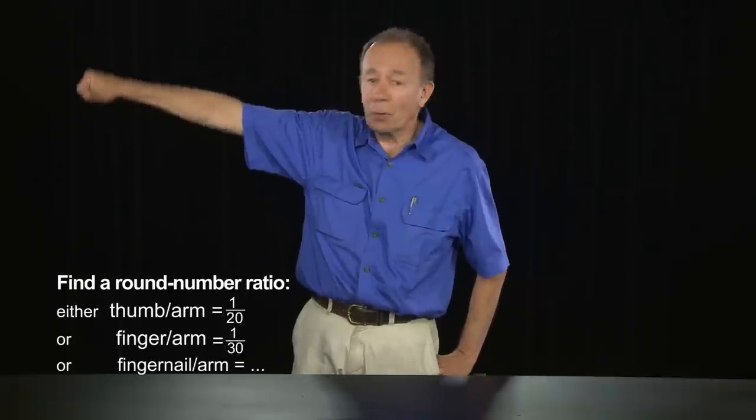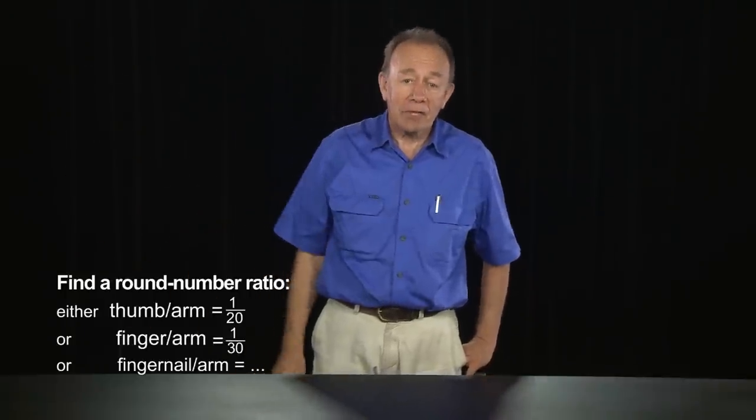Now, you and I are not necessarily the same shape, so you'll need to calibrate your measuring instrument. Perhaps you can't find a position on your thumb that is 1 20th of the thumb distance. In that case, you probably can find a width on one of your fingers that's 1 30th or 1 40th of that distance.